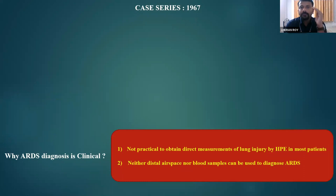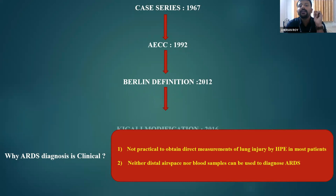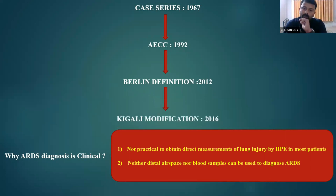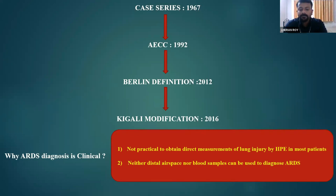From the historical perspective: 1967 saw the case series by Ashbaugh and Petty; the AECC provided their definition in 1992; pitfalls were addressed in the 2012 Berlin definition; and one more modification was done in 2016, the Kigali modification. ARDS diagnosis is said to be clinical because it is not practical to obtain direct measurements of lung injury by histopathological examination in most patients, and neither distal space nor blood samples can diagnose ARDS. We must stick to the Berlin definition for diagnosis.